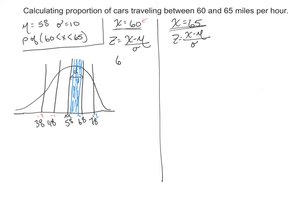So we're going to go 60 minus the average score, or average miles per hour is 58, divided by standard deviation of 10. So 2 divided by 10.